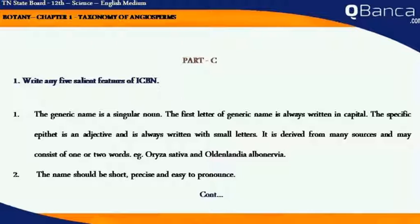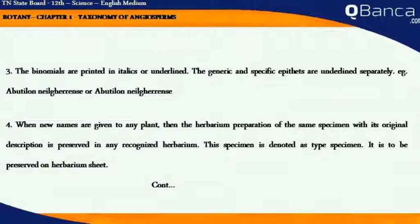The name should be short, precise, and easy to pronounce. The binomials are printed in italics or underlined. The generic and specific epithets are underlined separately. Example: Abutilon nilgeranense or Abutilon nilgeranense.